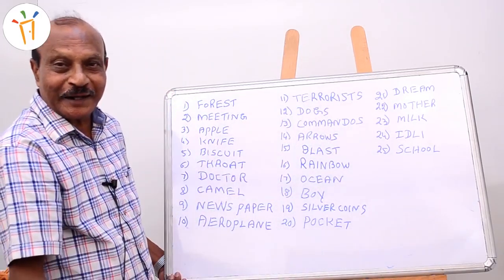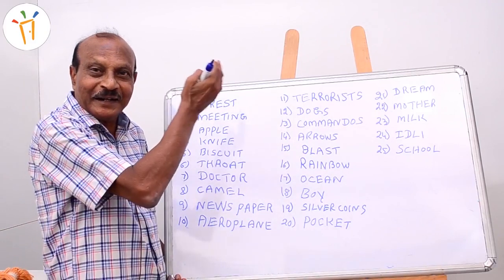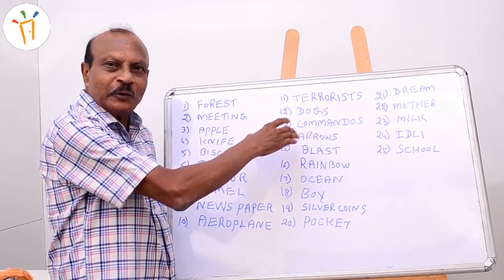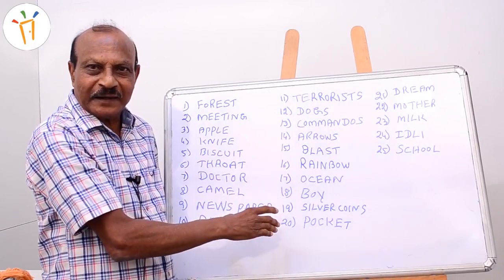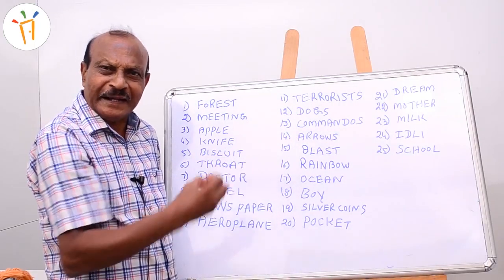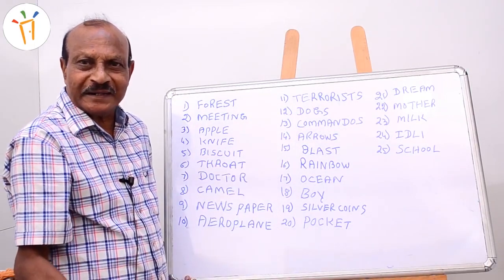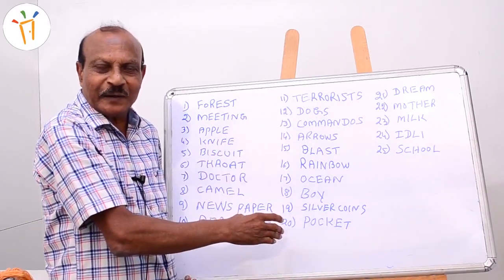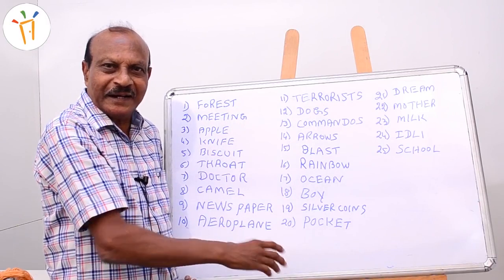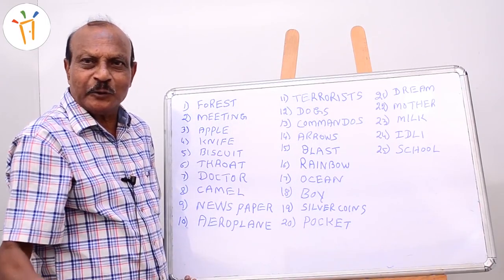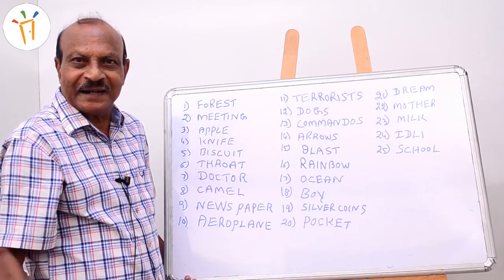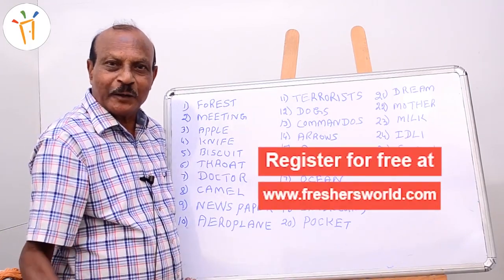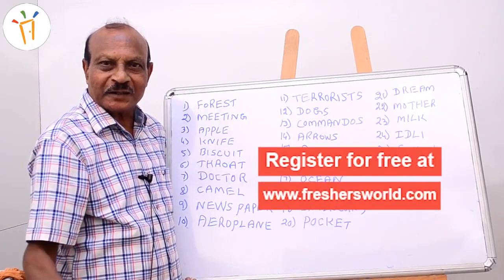This is the story you have to remember, and then you can recall all 25 words without seeing the board. I have shown the technique for 25 words, but you can do this for any number of words — two pages, three pages. You can remember by putting all your words into a story in the same manner. This technique will be very useful for IAS exams and other competitive examinations. Hope you enjoyed this video. Keep watching our videos. Thank you.